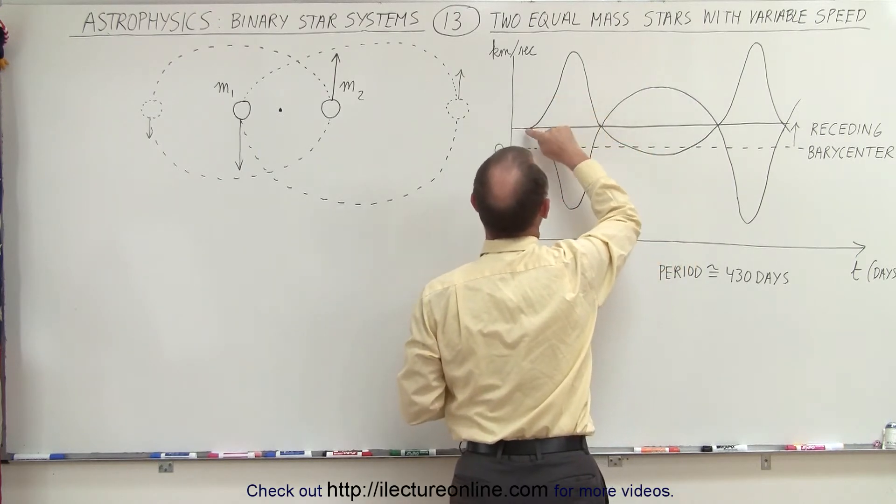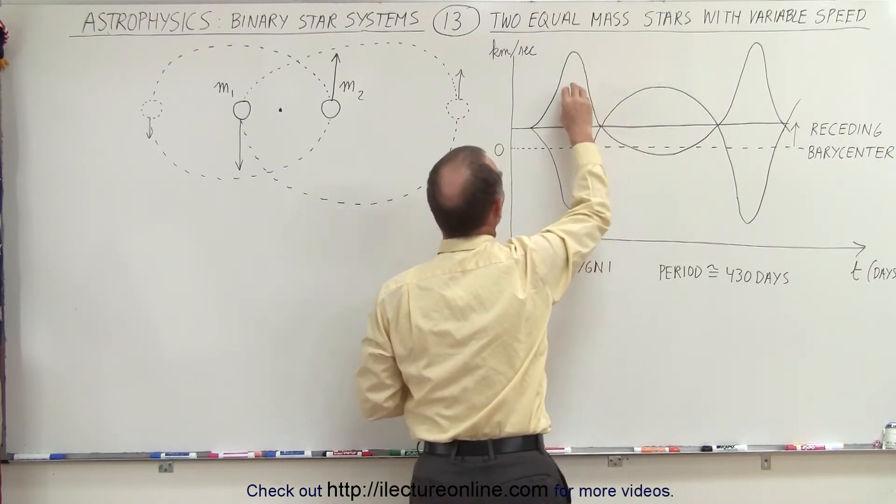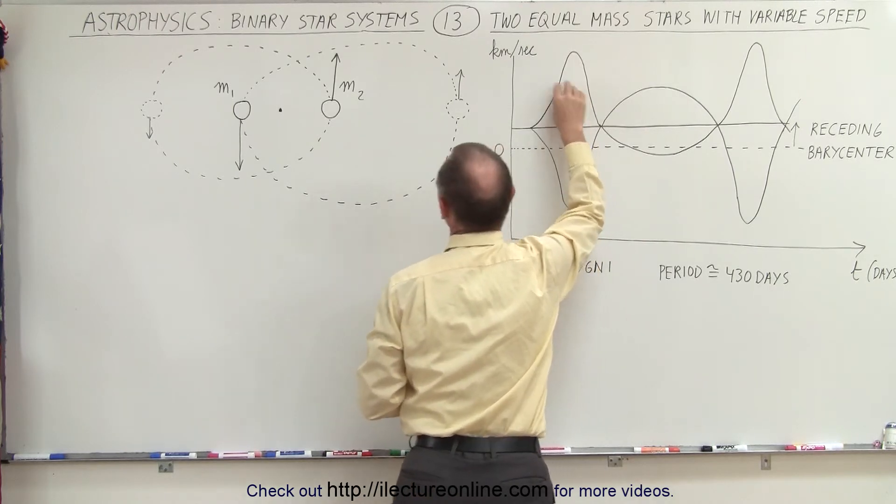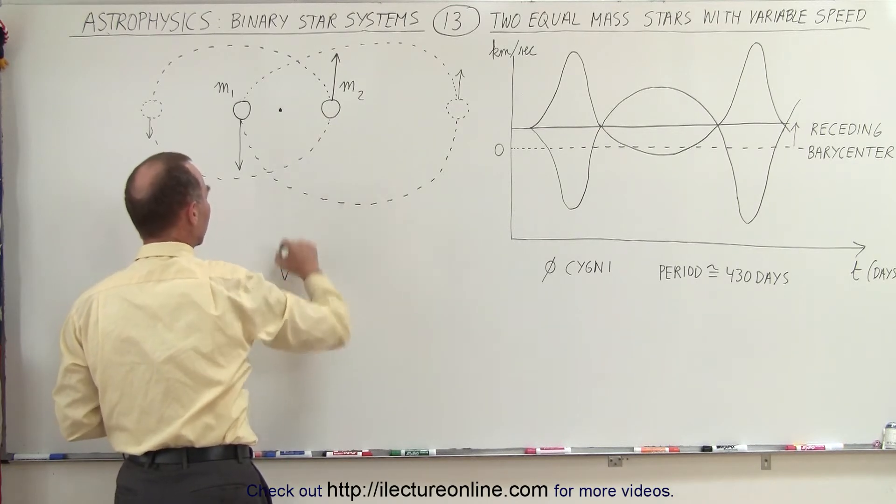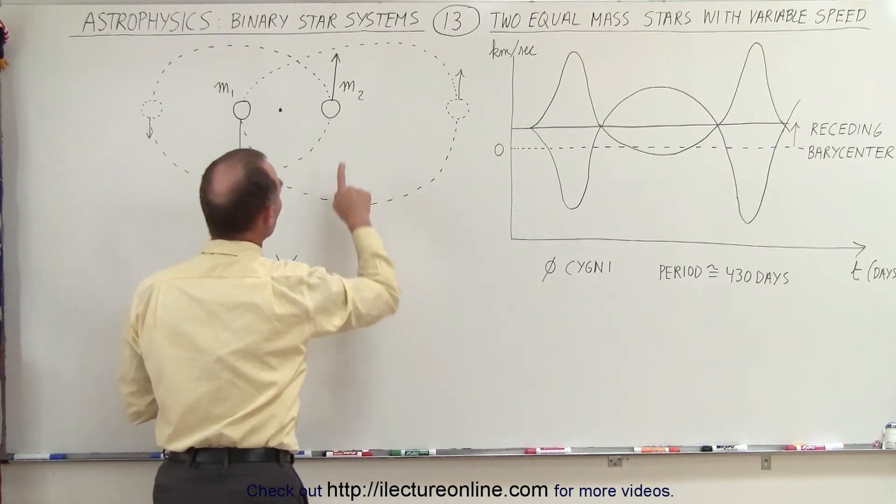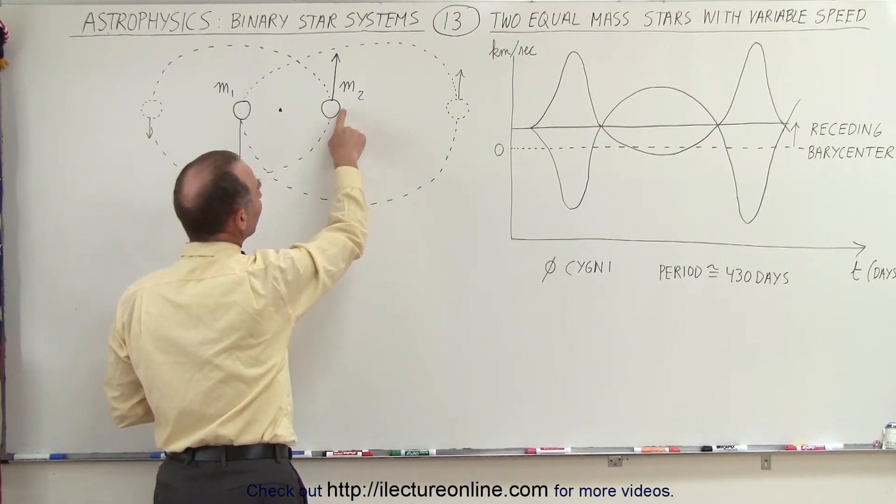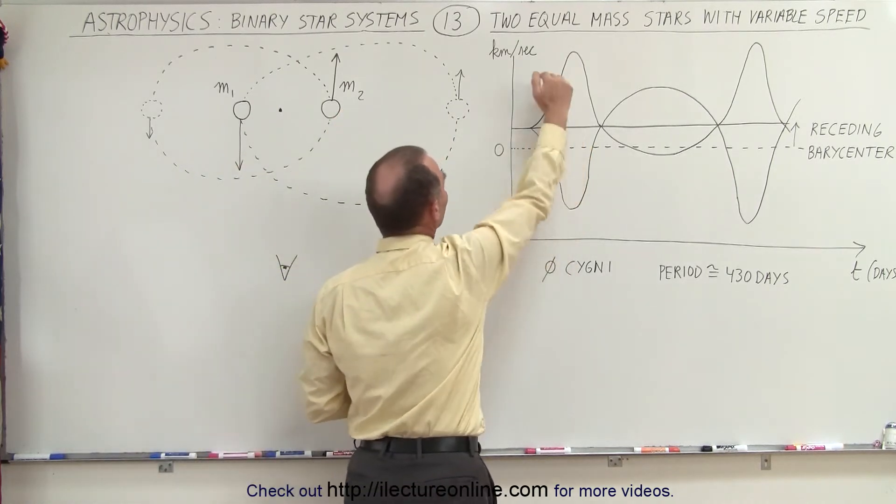So now in this case, you have the receding velocity. Let's see if we can match this curve to what's going on here. Assuming that this is the line of sight, we're looking in this direction. And notice that in this case, M2 is receding. Therefore, we see positive velocities.